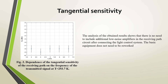Another important characteristic of the operation of fiber optic cable with an air optical channel is the tangential sensitivity G of the receiving path, which is placed on the user's table. It was found that when the light control system was connected to the path, the G value did not change significantly and is about –78 dBm. The analysis of the obtained results shows that there is no need to include additional low-noise amplifiers in the receiving path after connecting the light control system developed by us. The basic equipment does not need to be reworked.